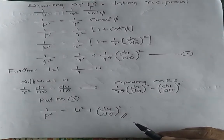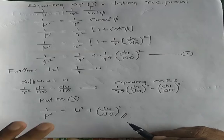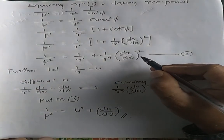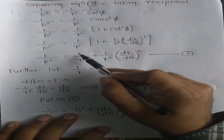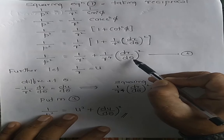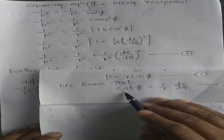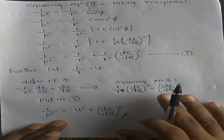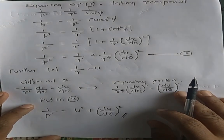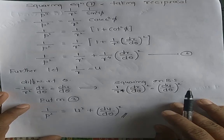Go through this proof and write it 2 to 3 times by seeing it, then close the book and derive it without looking. These are very important derivations. This expression — 1/p² = 1/r² + (1/r⁴)·(dr/dθ)² — will be used in further examples. I hope you have understood. Next, I will start with examples on the angle between two polar curves in the next video lecture. Thank you.